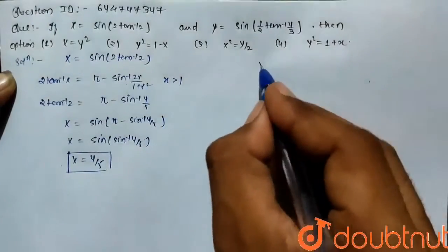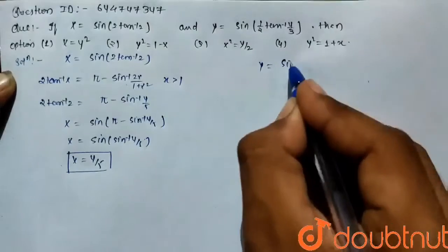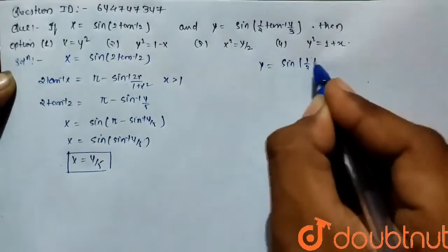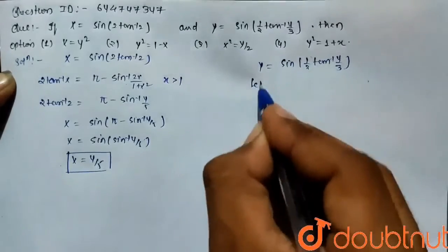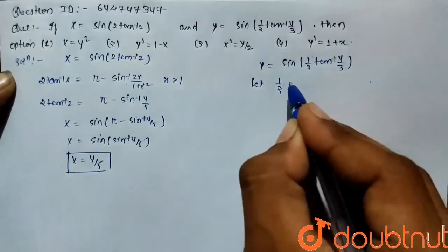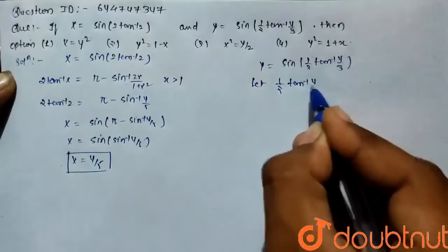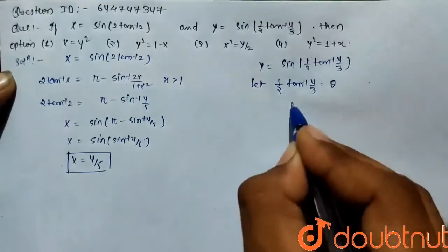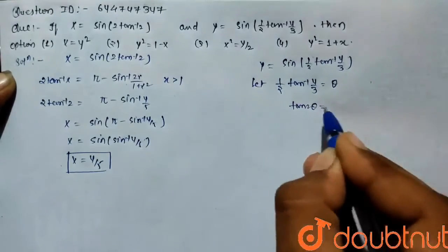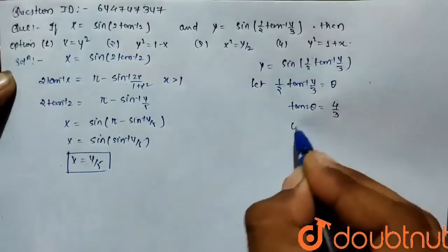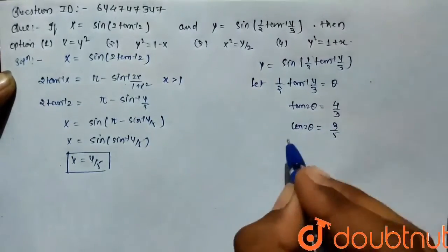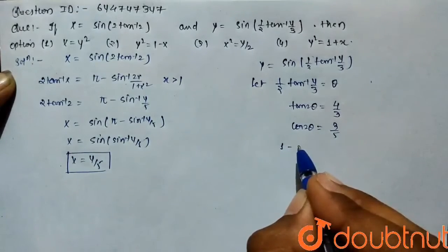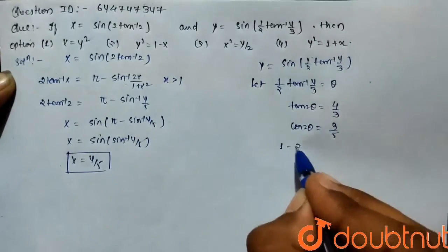Similarly here we are given that y equals sin of 1 by 2 tan inverse of 4 by 3. Let 1 by 2 tan inverse of 4 by 3 equals theta, so tan 2 theta equals 4 by 3.